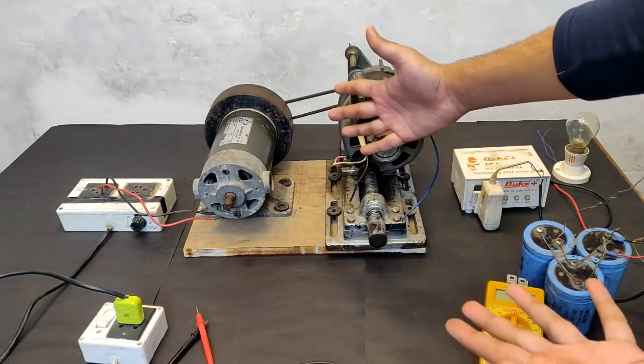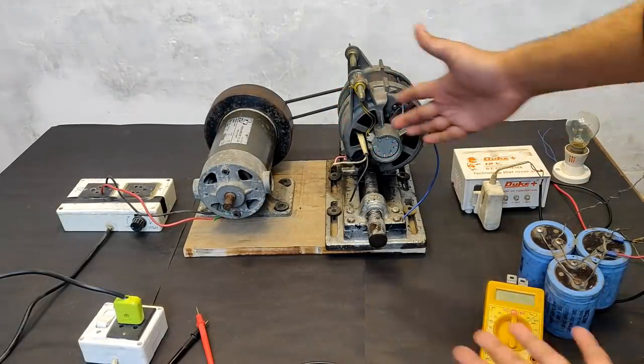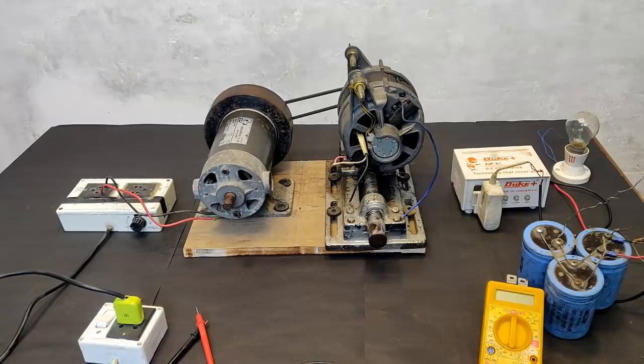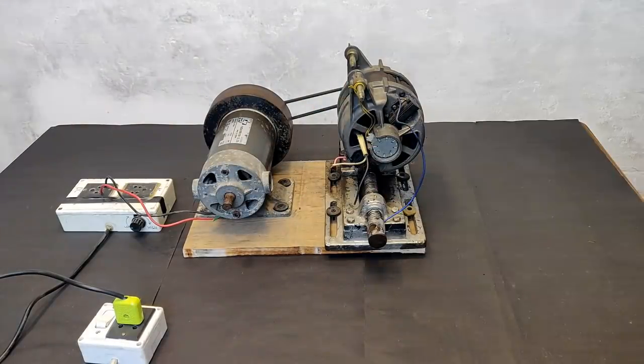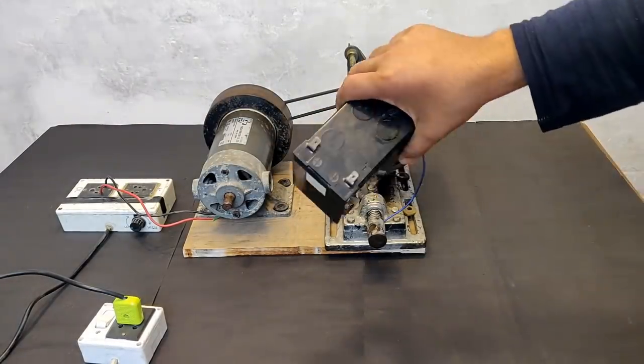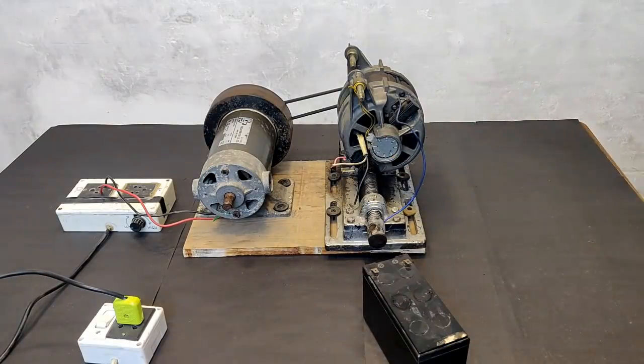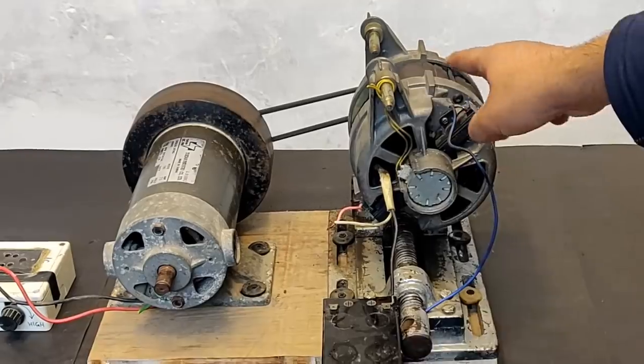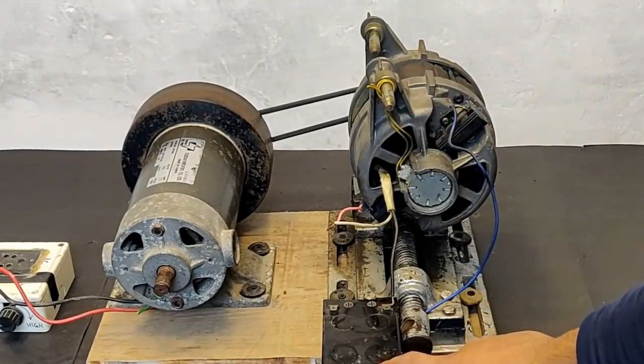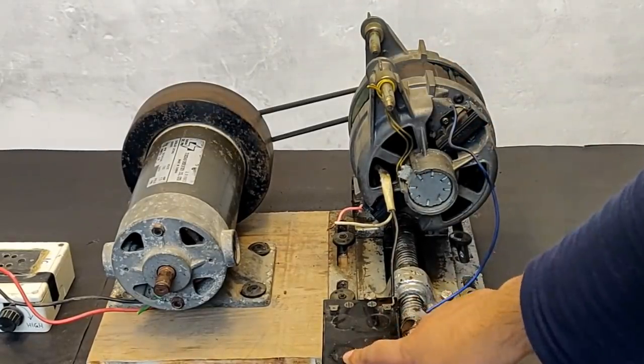Now guys you all must be thinking that this method is super complicated. Well, the good news is that there is another shortcut, super shortcut at which you are not going to need any of these. So for that I am going to use this 12 volts UPS battery. Next, what you have to do is run this motor with a DC source, not an AC but a DC source.